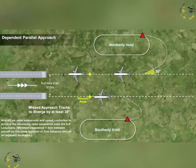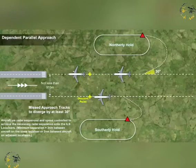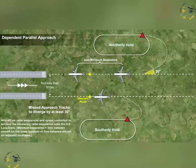Dependent approaches maintaining radar separation between aircraft on adjacent tracks are permitted when the provisions of independent approaches are met and the radar controller has the capability to override the aerodrome radio transmission frequencies. Whilst under such radar control, aircraft must maintain a minimum separation of 1,000 feet vertically or three nautical miles laterally during their turns onto parallel localizers or MLS tracks.